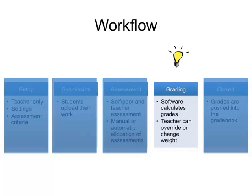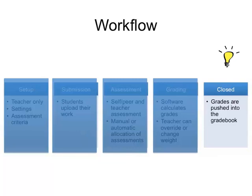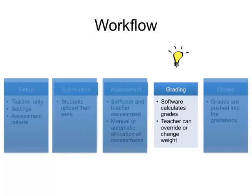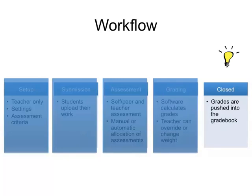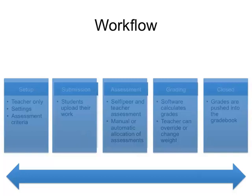When all the assessment has been done, you move on to the grading phase. This is where the software calculates the grades. It is important to know that students do not actually award a grade as such — the Moodle Artificial Intelligence does it for them. As a teacher you have the ability to review all of the grades and override a grade or change their weight. Once all the grading has been done, you move on to the closed phase. During grading, students cannot access the workshop. They can access it during the closed phase, when the grades are pushed into the gradebook and students can see what other students wrote about their submission. You can always go back a few stages if you need to make changes.